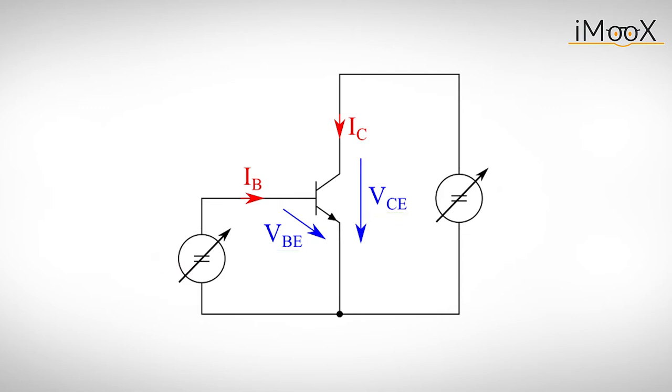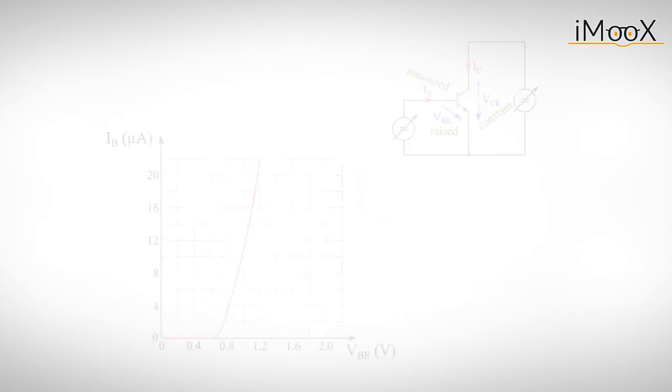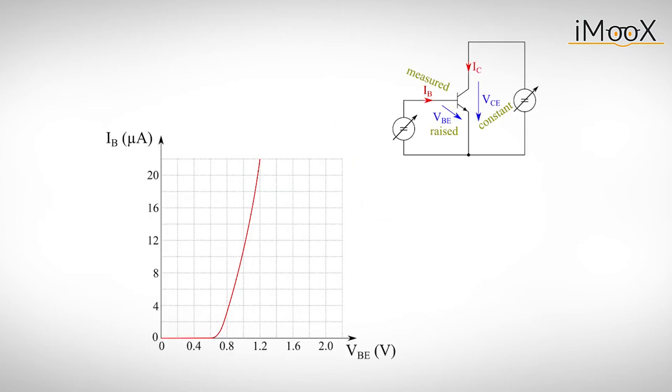For our first measurement, we keep VCE constant and slowly raise the base emitter voltage VBE. We measure the base current IB as we do so and get to the so-called input characteristic of a bipolar transistor. You may recognize this characteristic as the behavior of a forward biased diode, which makes a lot of sense if you remember the simplified diode circuit from our last video.